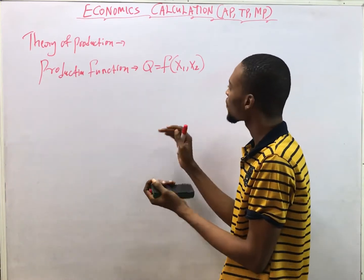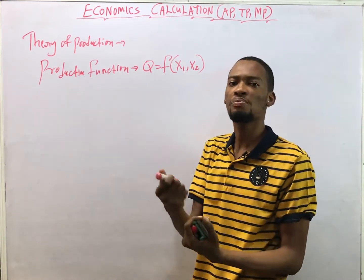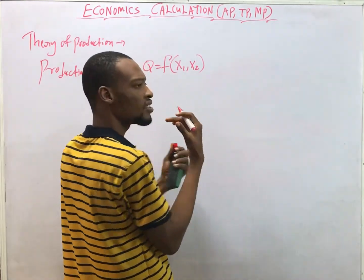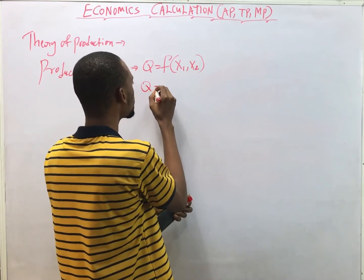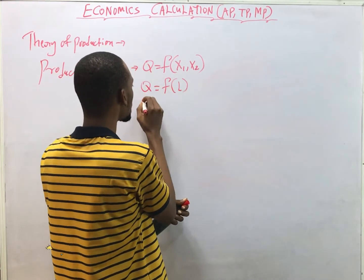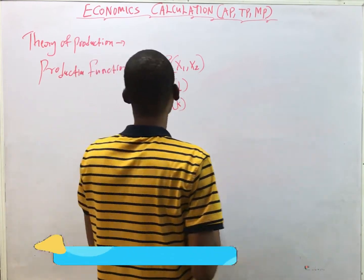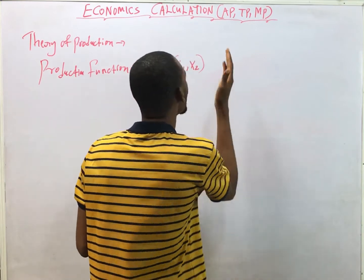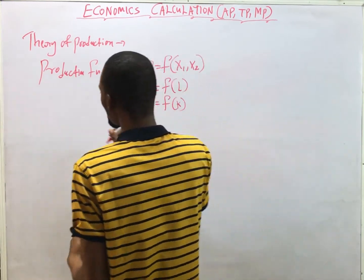As output increases, input should also increase, and as input decreases, output should decrease. The inputs in production are the factors — most commonly labor or capital. This implies that output in production is a function of labor and also a function of capital. That's the production function.